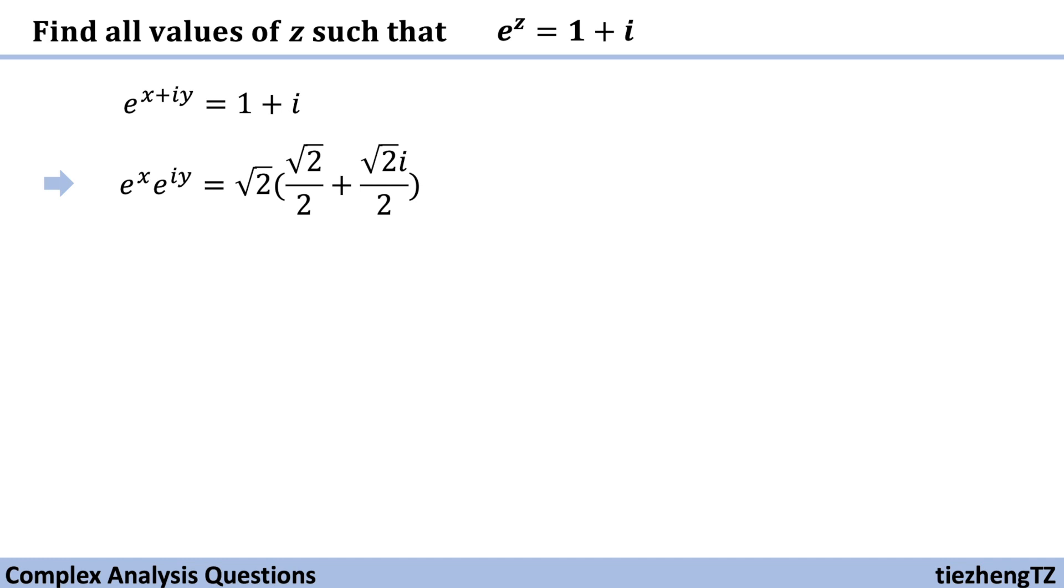The reason why we did this is because half square root 2 is equal to cosine pi over 4 and sine pi over 4. And the equation within the parentheses is e to the power of pi over 4 times i in the exponential form.